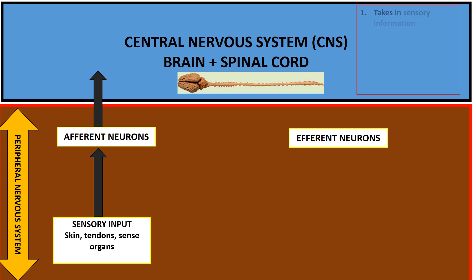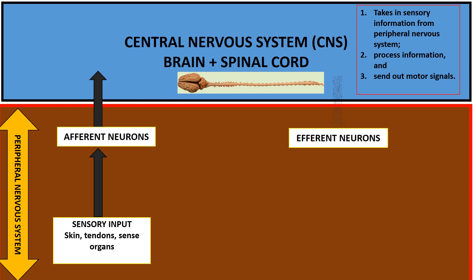The brain takes in this sensory information, processes it, and then gives out a command or instruction by sending out motor signals. These motor signals end up going through the efferent neurons, and the commands from the brain reach the effector organs — the muscles or glands — via the efferent neurons.